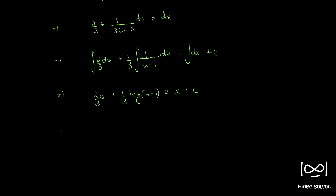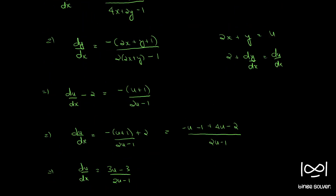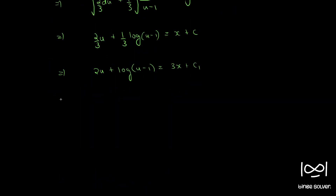Multiplying throughout by 3, we get 2u + log|u - 1| = 3x + c. Now, our substitution was u = 2x + y. Substituting back, we get 2(2x + y) + log|2x + y - 1| = 3x + c.